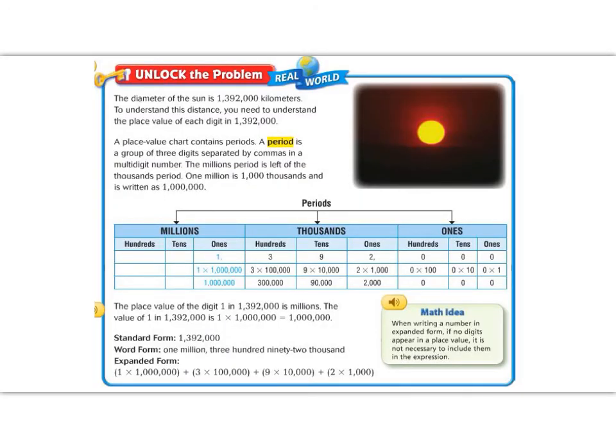Let's continue our flip lesson by opening our math books and looking at the unlock the problem for lesson 1.2. Remember that the flip lessons follow along with the pages in your math book and anything I write, you should write as well. I'll read it this time. It says, the diameter of the sun is 1,392,000 kilometers. To understand this distance, you need to understand the place value of each digit in 1,392,000. A place value chart contains periods. A period is a group of three digits separated by a comma in a multi-digit number. The millions period is to the left of the thousands period. One million is one thousand thousands and is written as 1,000,000.